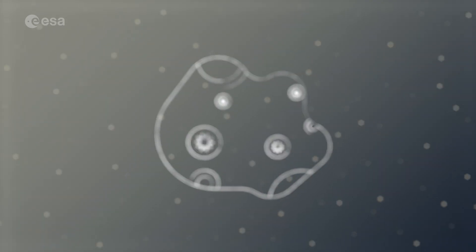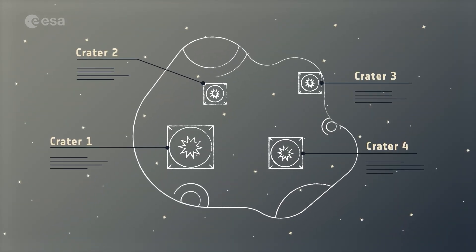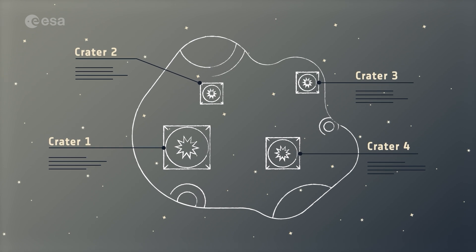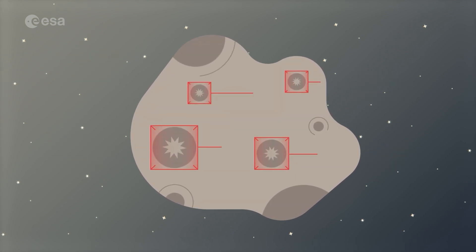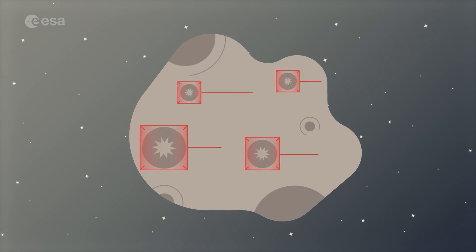She'll also take this opportunity to practice autonomous vision-based navigation. This involves tracking features like craters, using them as reference points. This is how she'll navigate herself when close to the asteroids.